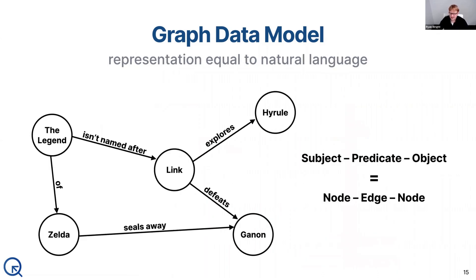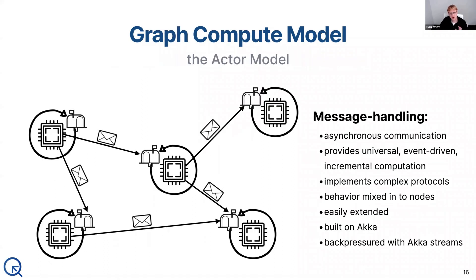The graph itself as a data model is exactly analogous to the way we speak in language, where that subject-predicate-object pattern that shows up in natural human language translates directly into a node-edge-node pattern like what you see in a graph. That direct translation means that in a graph, we can express literally anything that you could say out loud, and express it in a way that gives you the capability to compute over top of it. This is where Quine's second innovation really comes into play: we've taken the graph data model and paired it with a graph computational model.